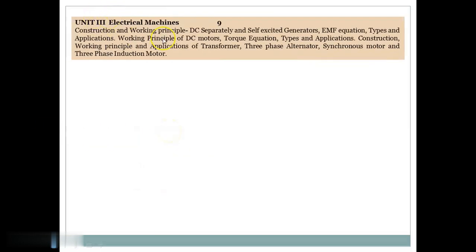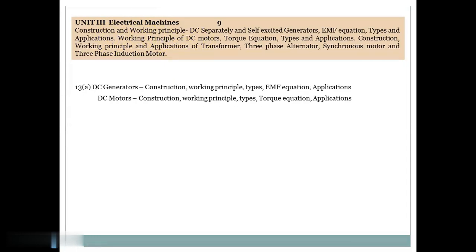The third unit is Electrical Machine. Electrical Machine is divided into two categories, one for DC Machine and another one for AC Machine. If you consider 13A, DC Generator and DC Motors are expected. Construction, Working Principles, Type, EMF Equation and Applications of DC Generators are to be known by the students.